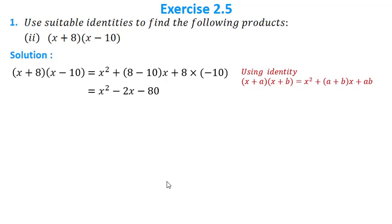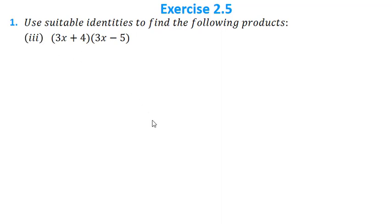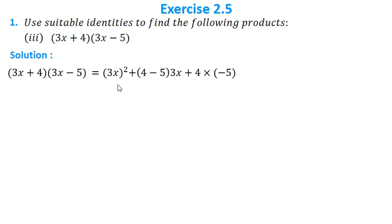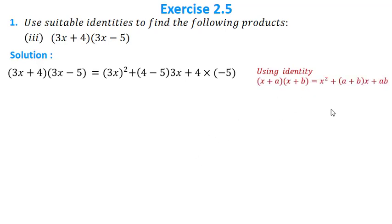The third question is (3x + 4)(3x − 5). Here the first term is 3x. Using the identity with x replaced by 3x, a = 4, b = −5: (3x)² + (4 + (−5))(3x) + (4 × (−5)) = 9x² − 3x − 20.